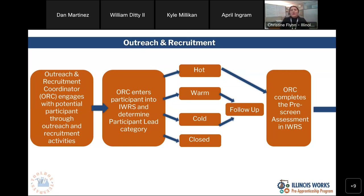Depending on what lead type this participant is, you're going to take your next step. If they are hot, warm, or cold, you are going to conduct your normal follow up — phone calls, emails, social media contacts. It's important to remember that it generally takes around 7 contacts or 7 touches with that individual for them to really engage in the program. That could be seeing a flyer, seeing your Instagram posts, getting a phone call, getting a follow-up phone call. Any kind of interaction they have with your program we consider a touch, and that's all part of that follow up.